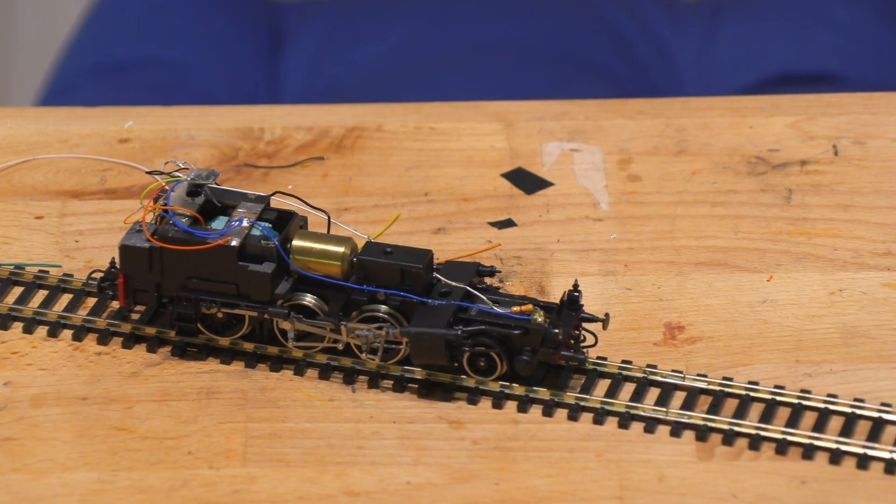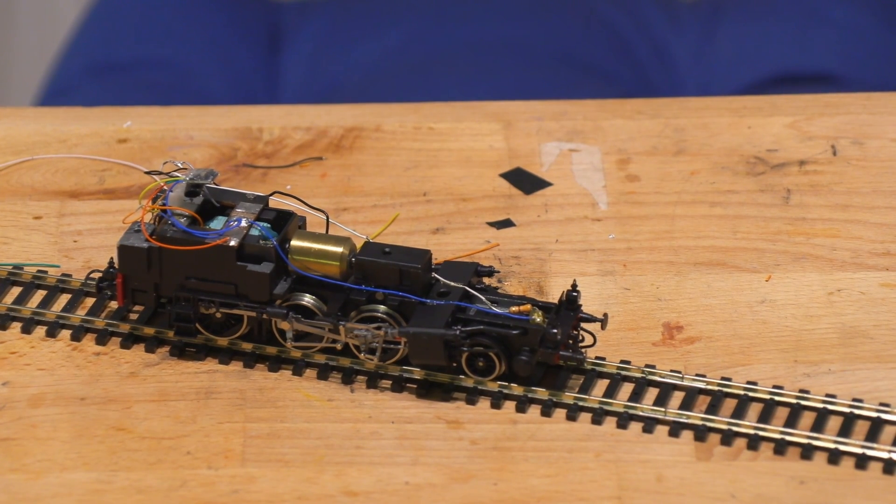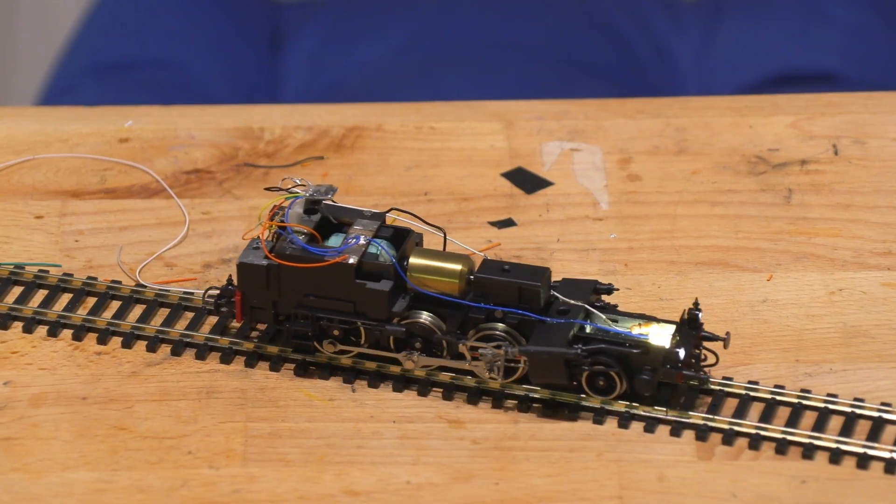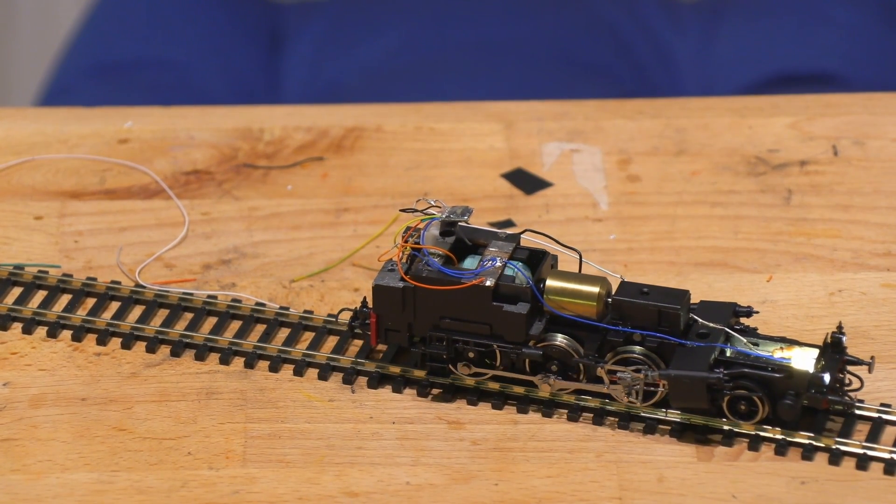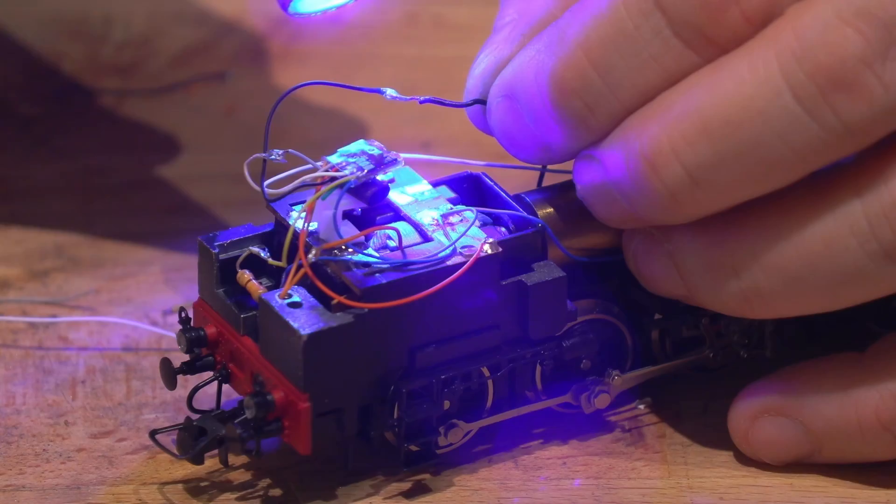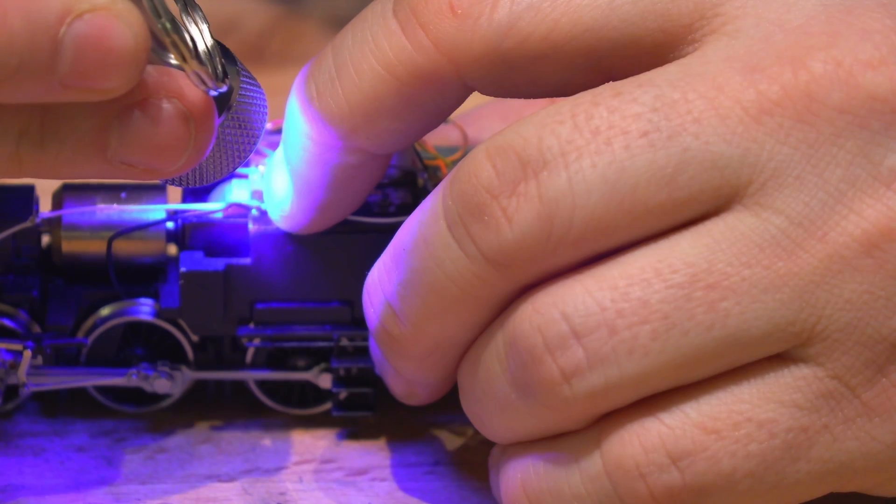Before we finish the conversion, we put the locomotive on a test track, update the decoder and program it. Then we check that everything is working properly. If it is, we insulate all the solder joints with bondic and fix the wires so that they do not move.